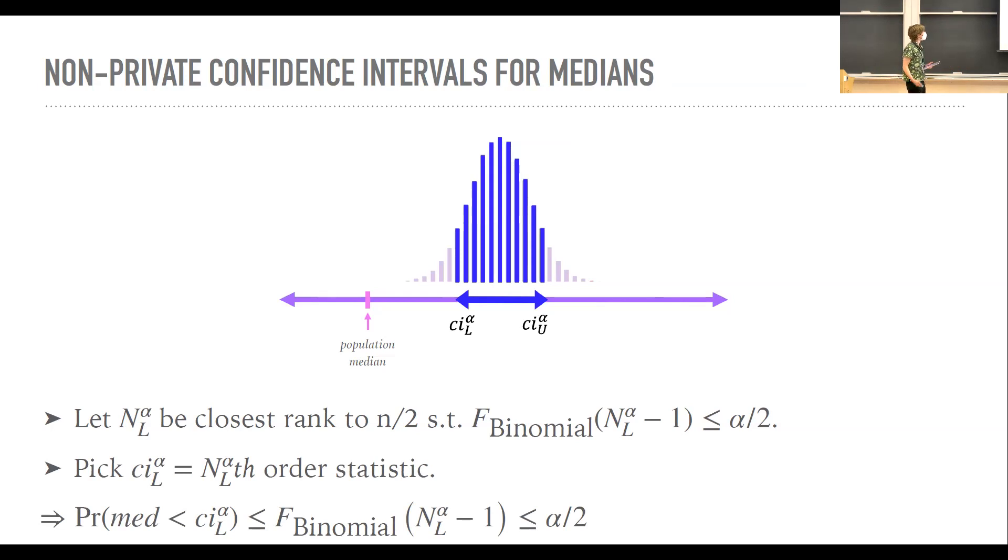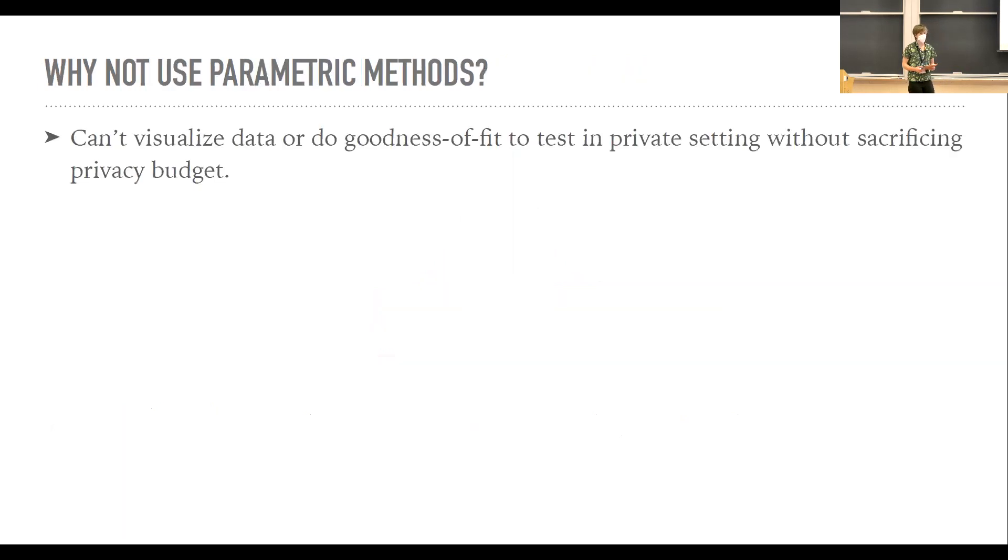So you might wonder, why are we bothering doing this non-parametrically instead of parametrically? And there's a couple of reasons for this. First of all, as we're all familiar with here, when we're doing things in the private setting, we can't nicely visualize the data or do some nice goodness of fit testing to see if our parametric assumption is correct. You might say, okay, but in an income setting, for example, everyone always assumes that data is log normal. Why can't we do that here? Well, you could.